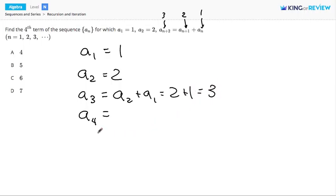By the same logic, a4 is the sum of the previous two terms, a3 and a2, which, according to our table, is 3 plus 2, or 5. So our answer is b. Thanks for watching!